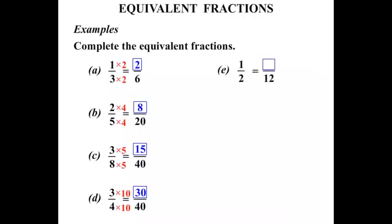The next one, 1 half equals something over 12. Well, the denominator is 2. We've turned it into a 12 by multiplying by 6. So if we multiply the bottom by 6, let's multiply the top by 6, the numerator. And 1 times 6 is 6.